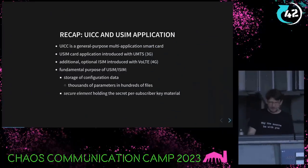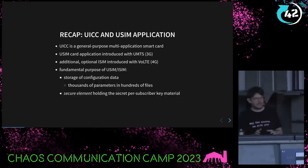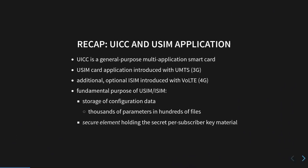Storage of contacts and storage of SMS messages was also an important feature back then. And last but not least, maybe the most critical part, is to serve as a secure element for the per-subscriber key material for authenticating the subscriber to the network. Then around 2000, UMTS 3G was introduced. In that, we went from SIM to USIM and also to UICC — the Universal Integrated Chip Card. It's a general purpose multi-application card where multiple applications can run, and the USIM is just one application on the card.